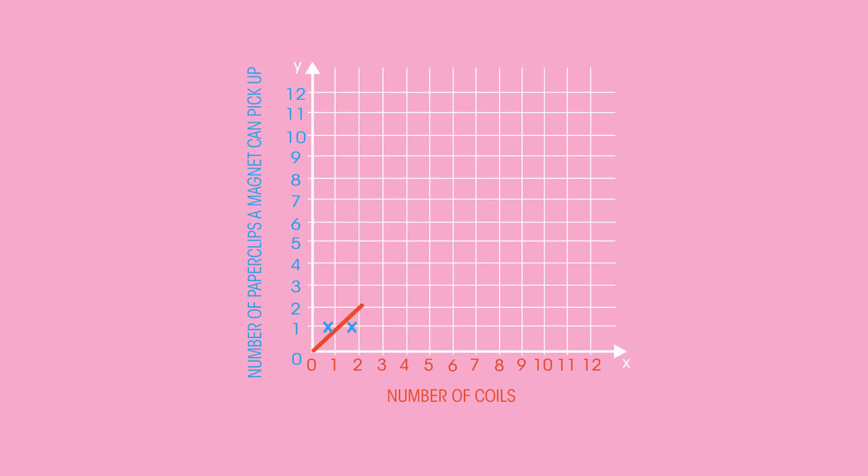See how the strength of an electromagnet changes with the number of coils. More coils, the stronger the electromagnet, and so the more paper clips you can pick up. So that graph has the number of coils on the x-axis.